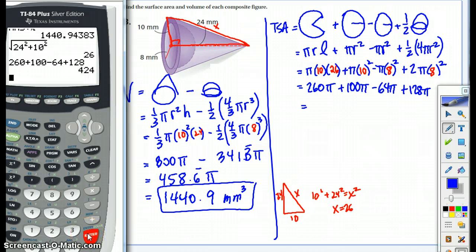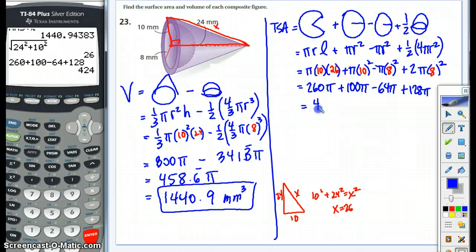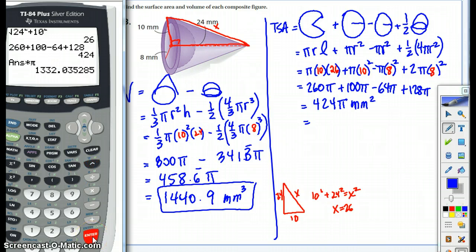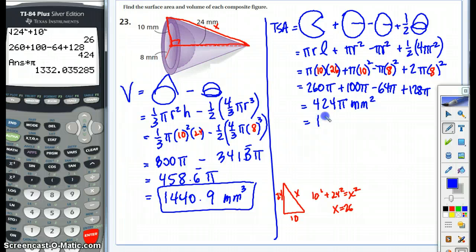Beating the clock. 260 plus 100 minus 64 plus 128. Pray we didn't make a mistake here. And that's 400. I think we might be in the ballpark. Pi. And these are millimeters squared. And we're going to multiply that times pi to get the answer. And the correct answer is 1332.0 millimeters squared. So these are both two big problems. But hopefully now you fully understand them and where the numbers come from. Thanks so much. We will talk to you later.